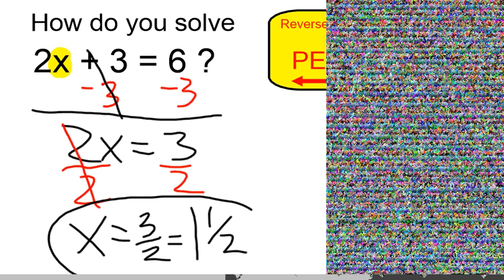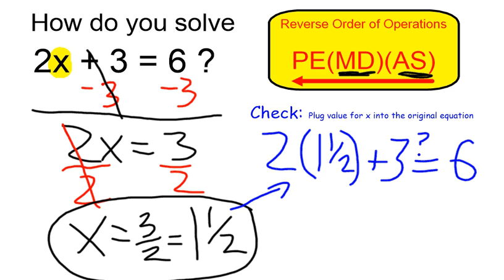I'm claiming that x must be 1 and a half for this to be true. Finally, I'd like to check my solution by taking my proposed value and plugging it into my original equation to see if it's true.